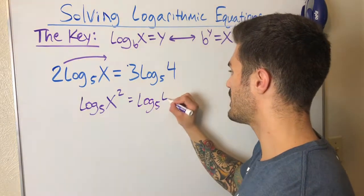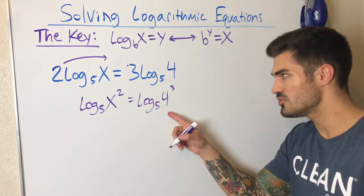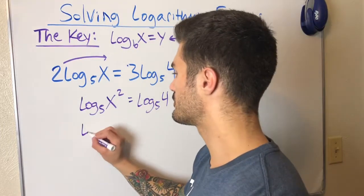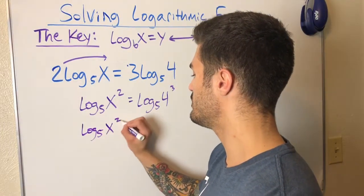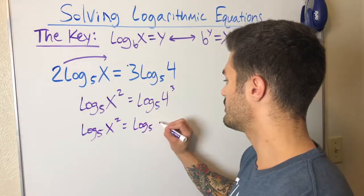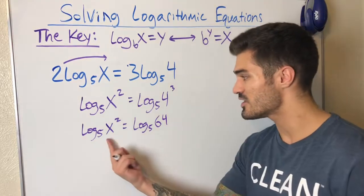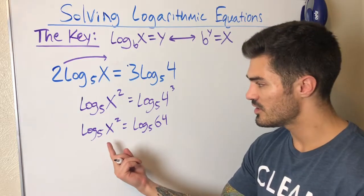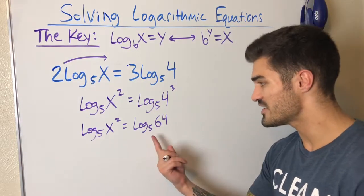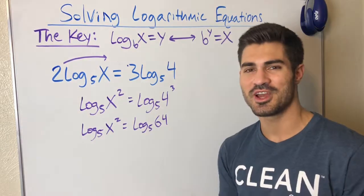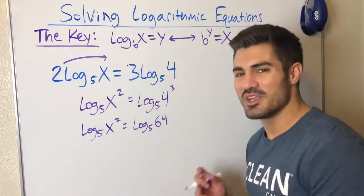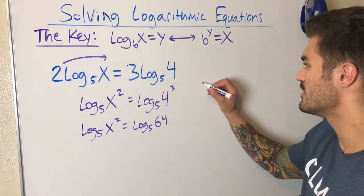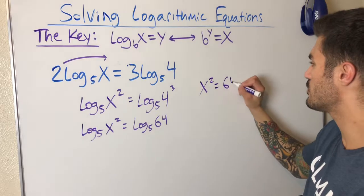The two comes up into the exponent, and the three does the same: log base five of 4³. Four cubed is 64, so I now have log base five of x² equals log base five of 64. Since I have the same base on both sides, I can set the arguments equal: x² = 64.